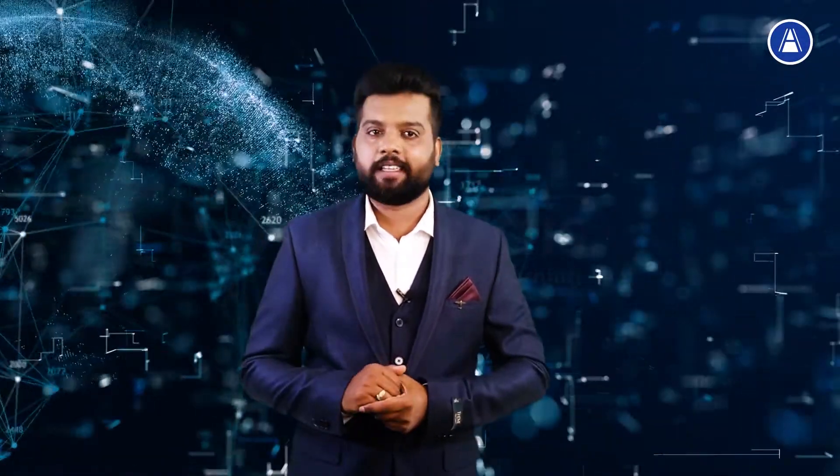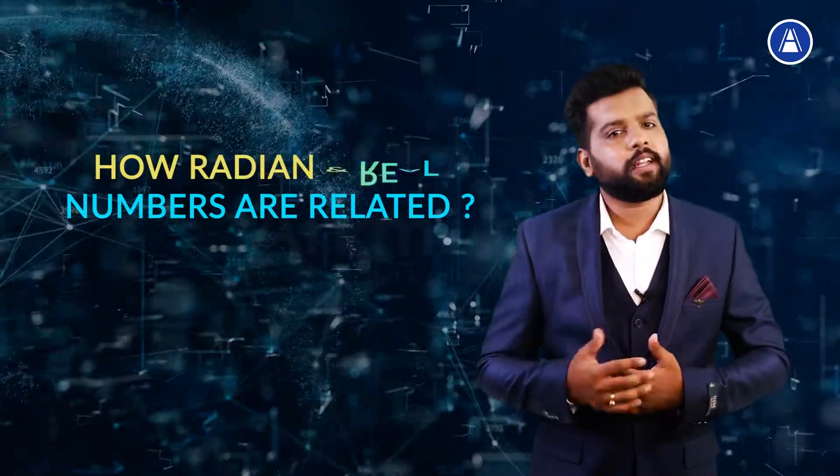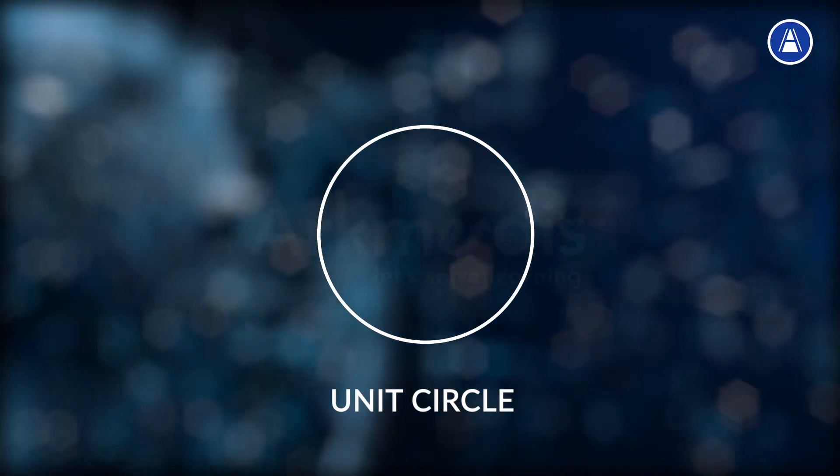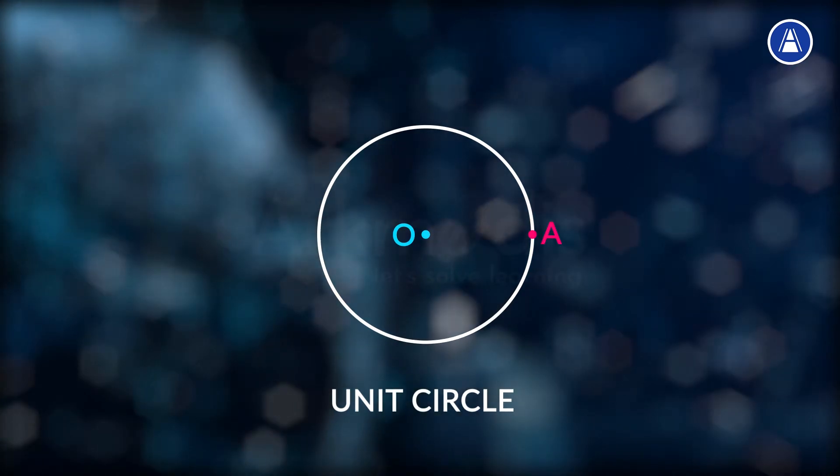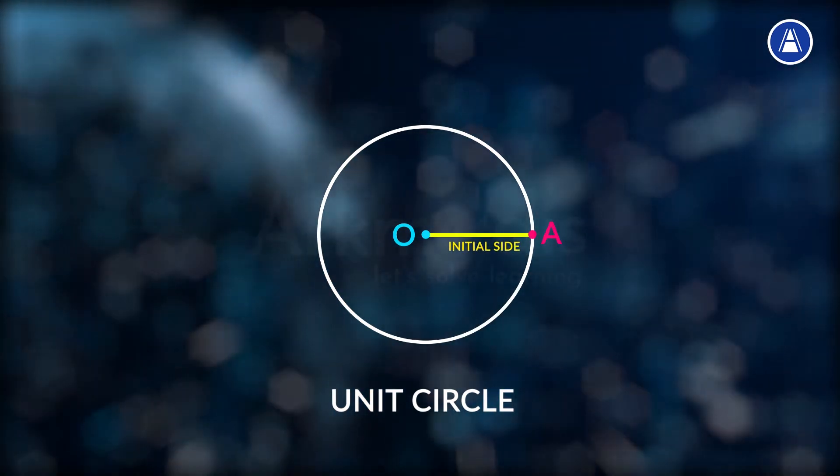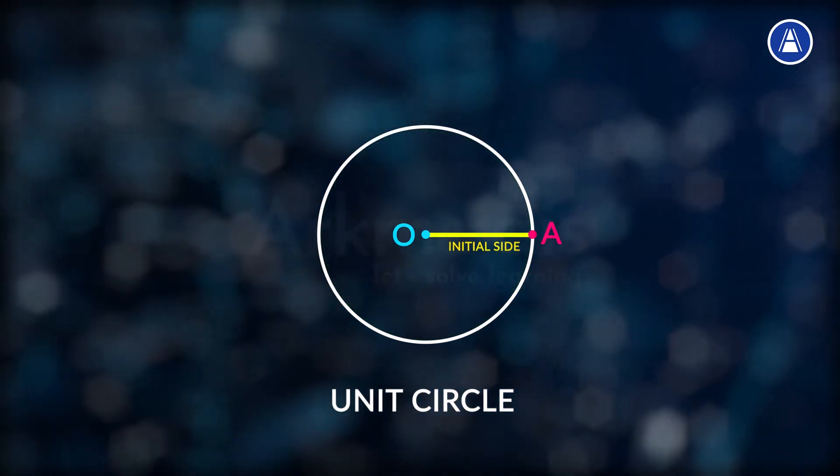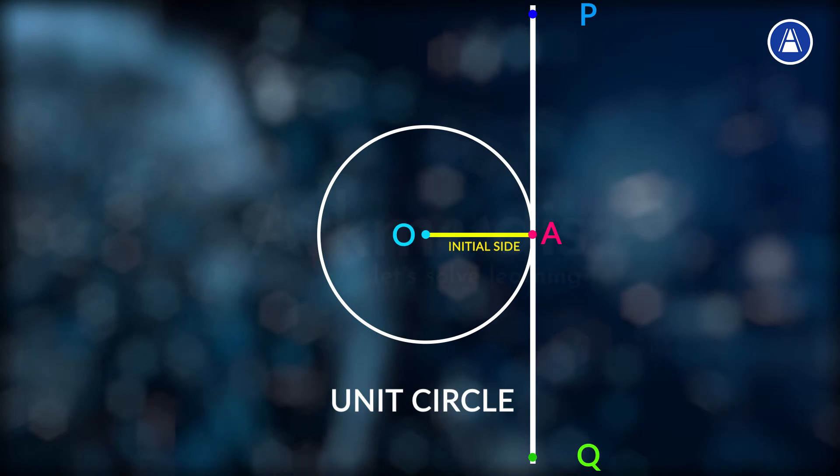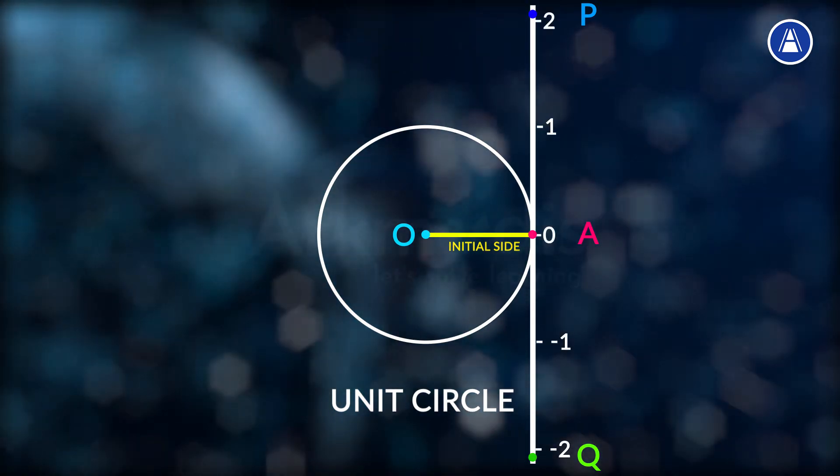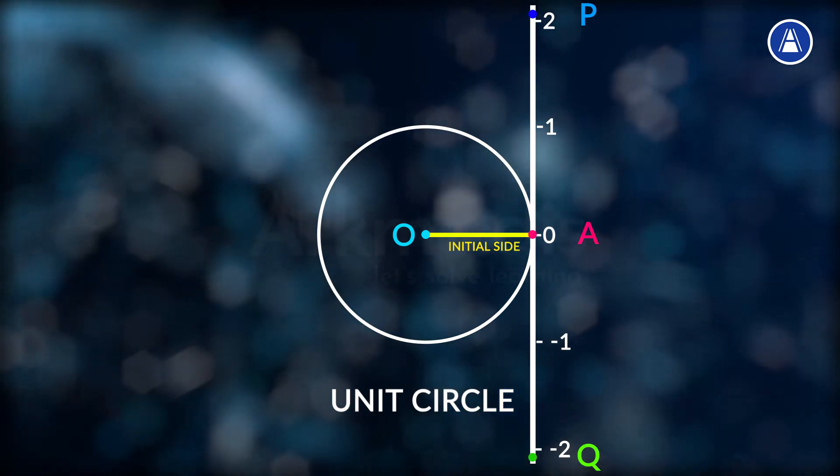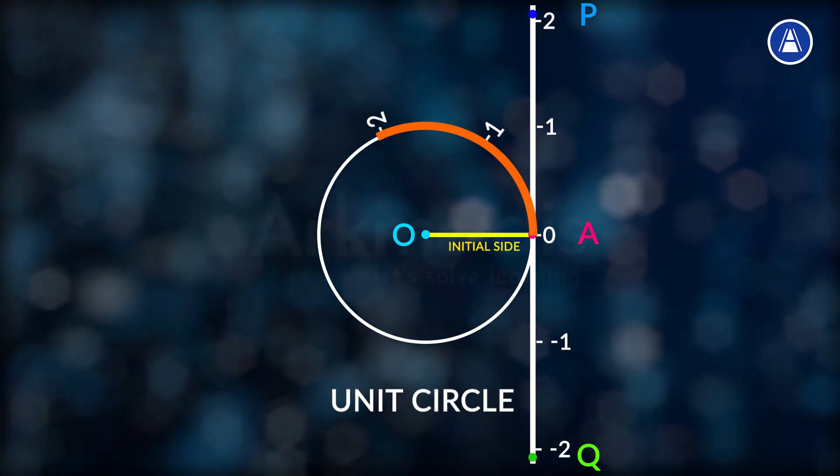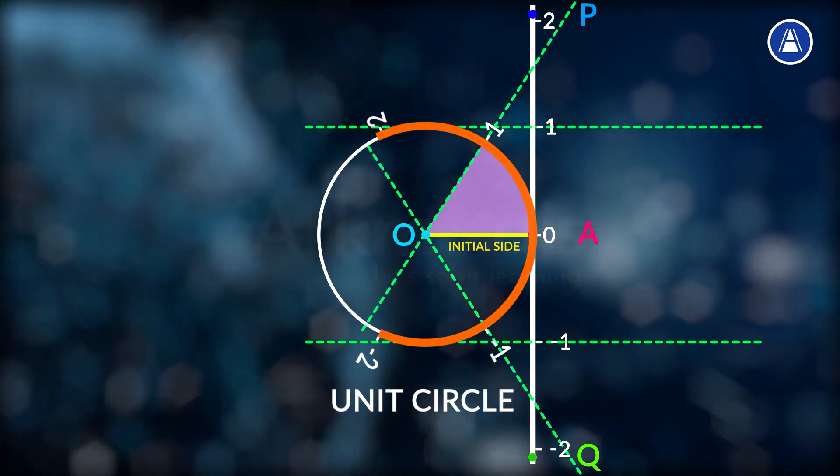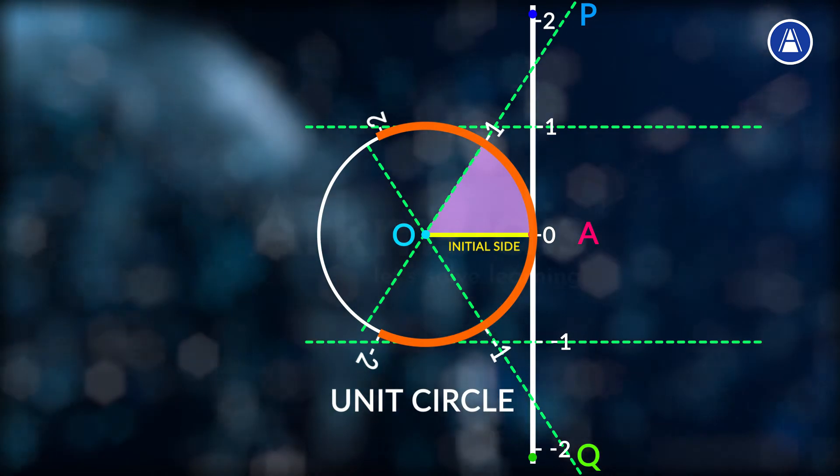The next topic is about how radian and real numbers are related. Let us consider this unit circle with center O. Let A be a point on the circle. Join OA and consider OA as initial side of an angle. Then the length of an arc of the circle will give the radian measure of the angle which the arc will subtend at the center of the circle. Consider the line PAQ which is tangent to the circle at A. Let point A represent real number zero, AP represents positive real numbers and AQ represents negative real numbers. If we wrap the line AP in anti-clockwise direction along the circle and AQ in clockwise direction, then every real number corresponds to a radian measure and conversely. Thus radian measures and real numbers can be considered one and the same.